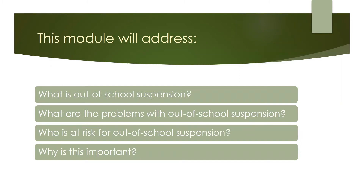We will start to answer the following questions: What is out-of-school suspension? How, when, and why is it used? And what are the problems with out-of-school suspension? Is it effective at improving behavior? And what other outcomes are associated with it? Next, we'll talk about who is most affected by out-of-school suspension, who is at higher risk, and why is all of this important? What is the bigger picture that out-of-school suspension is connected to?